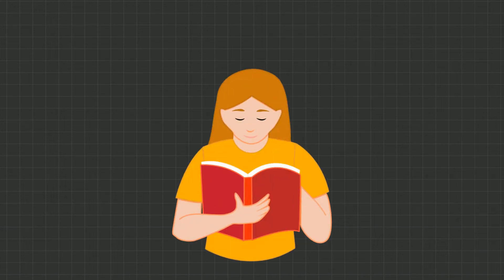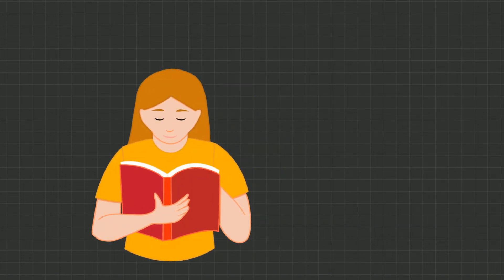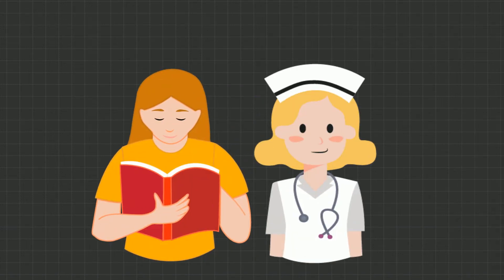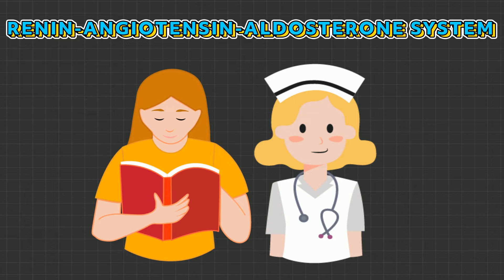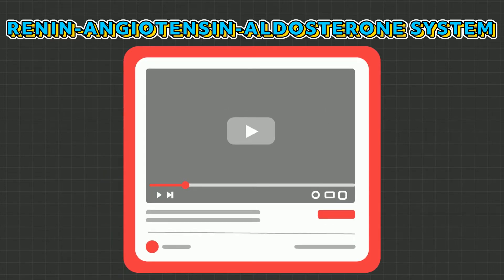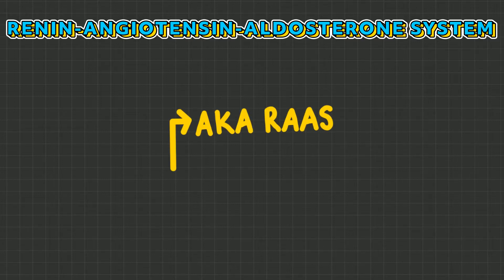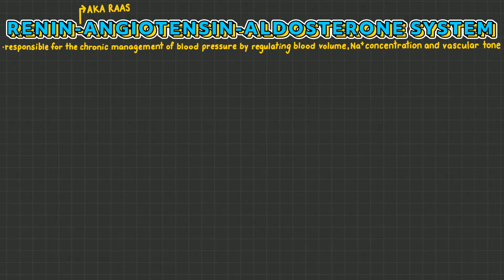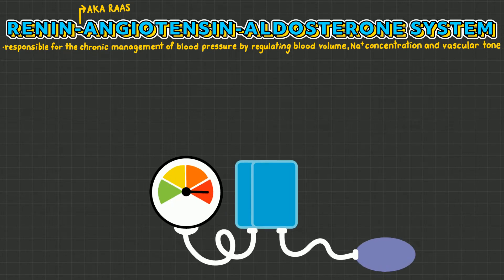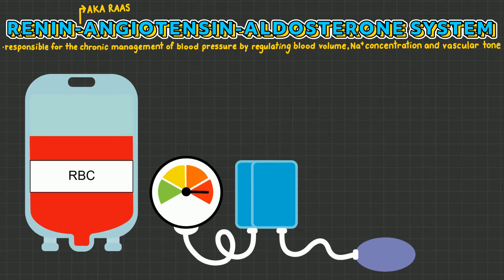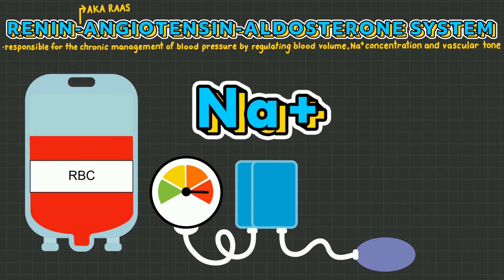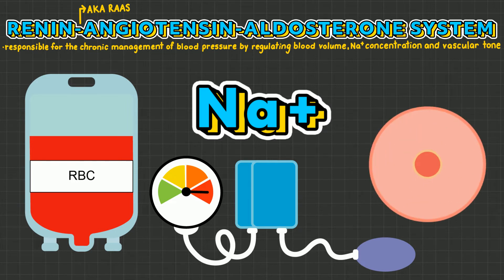If you want to learn everything you need to know as a nurse about the renin-angiotensin-aldosterone system, then this is the video for you. The renin-angiotensin-aldosterone system is also known as RAS. This system is responsible for the chronic management of blood pressure by regulating blood volume, sodium concentrations, and vascular tone.